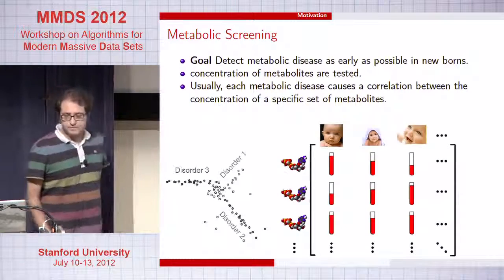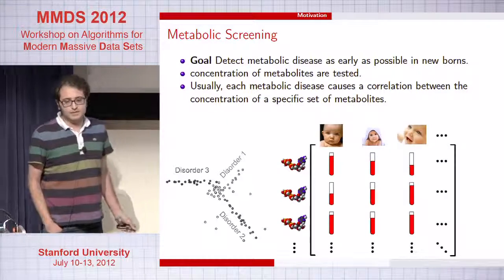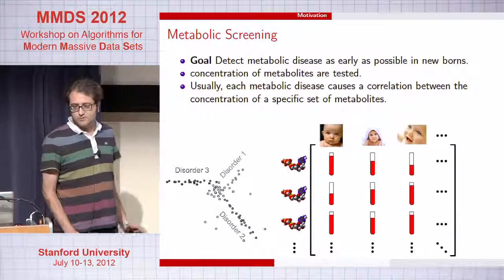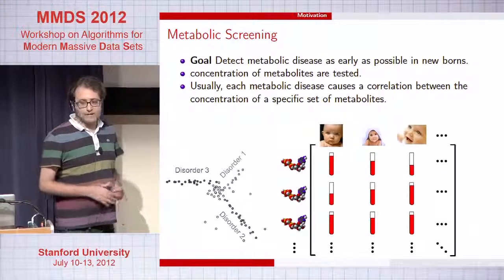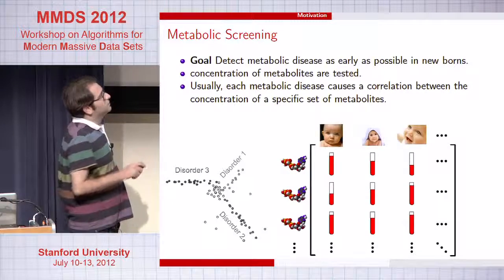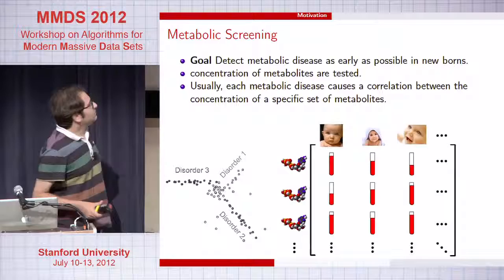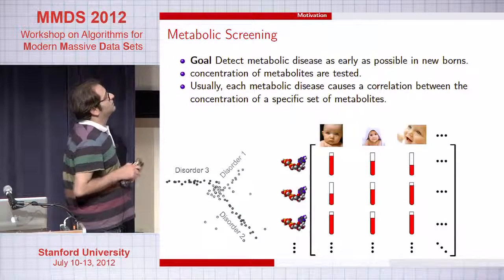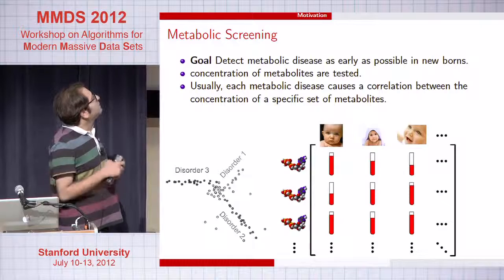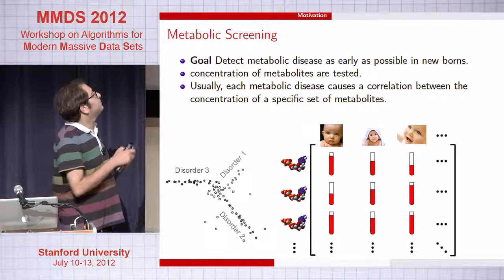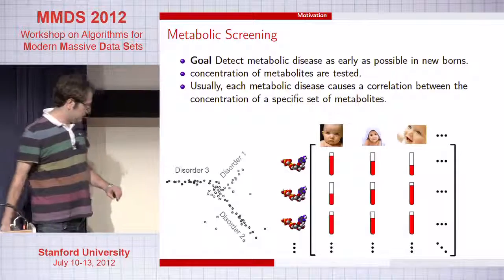Another motivation from a different perspective is disease detection. The goal is to classify different diseases and also to understand the relevant factors contributing to each disease — for example, metabolic screening. The data you have access to is basically blood tests: for each patient or newborn, you measure the concentration of different metabolites. A specific disorder causes a correlation between a specific set of these factors, so patients belonging to a single disorder live on a lower dimensional subspace. Subspace clustering becomes relevant.